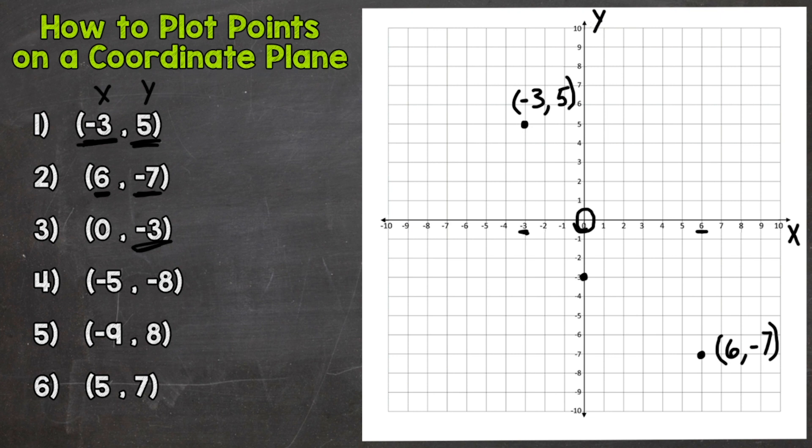And we plot our point. And it's actually going to be directly on our y-axis, since we didn't move over at all on our x-axis. So this is 0, negative 3.